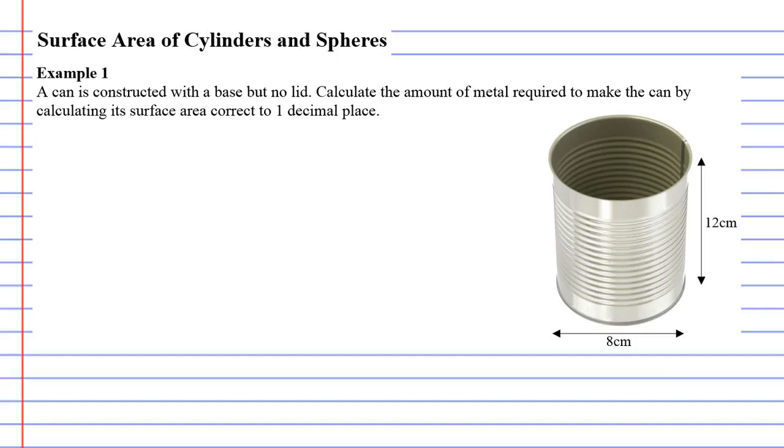We're on to example one and we're going to find the surface area of the cylinder. We've got a can that's been constructed with a base but no lid and we need to calculate the amount of metal required to make the can. We do that by calculating its surface area. First we need to come up with the correct equation.